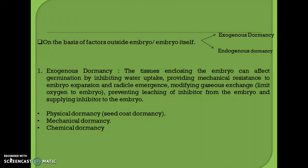Exogenous dormancy is mainly divided into three categories: physical dormancy, mechanical dormancy, and chemical dormancy. In physical dormancy, the seed coat may become hard, fibrous, or mucilaginous, behaving like an adhesive gum during dehydration and ripening. As a result, it becomes impermeable to water and gas, preventing physiological processes initiating germination. This type of dormancy is common in drupe fruits such as olive, peas, plum, apricot, and cherry.